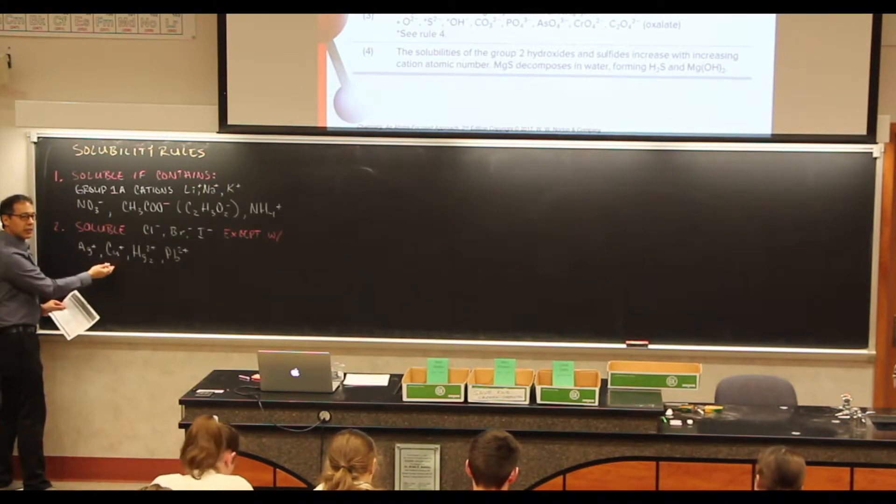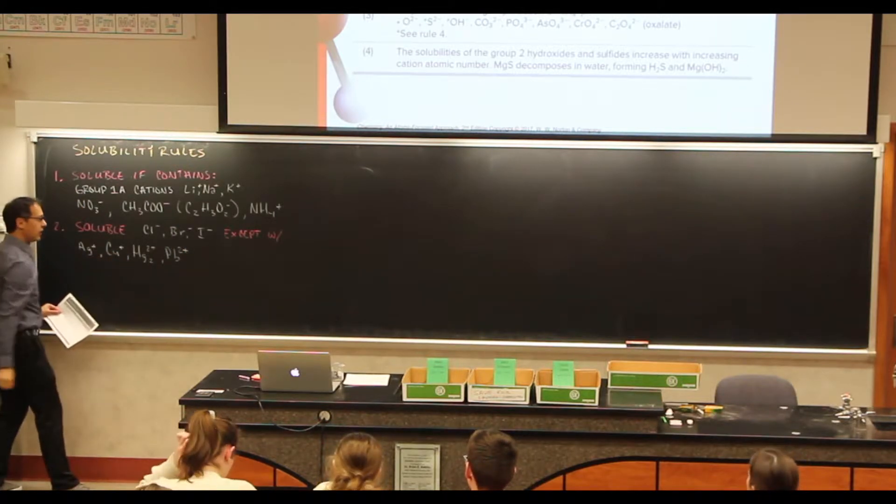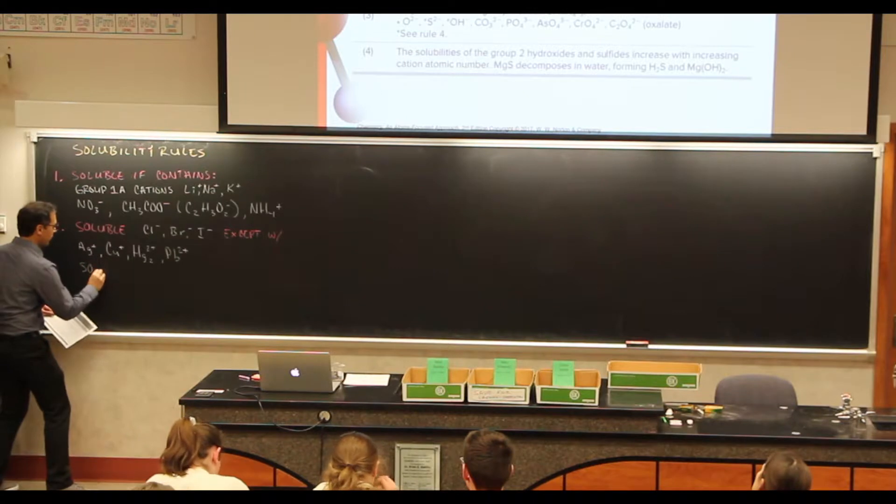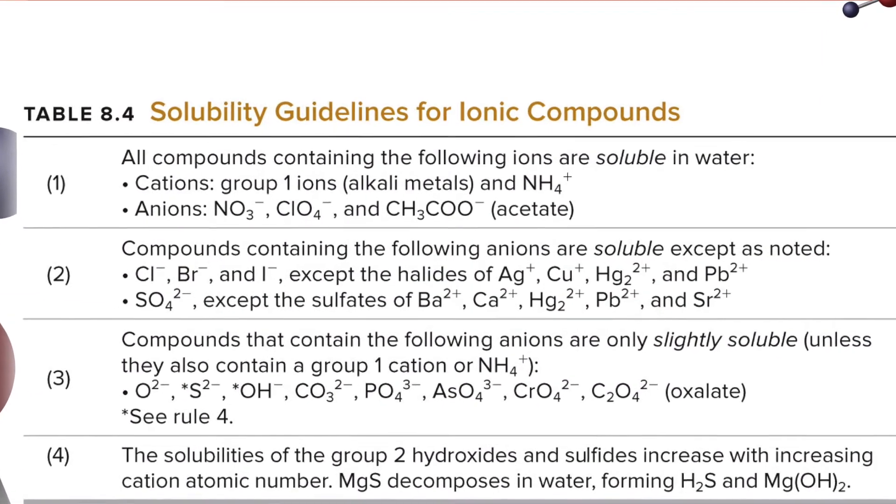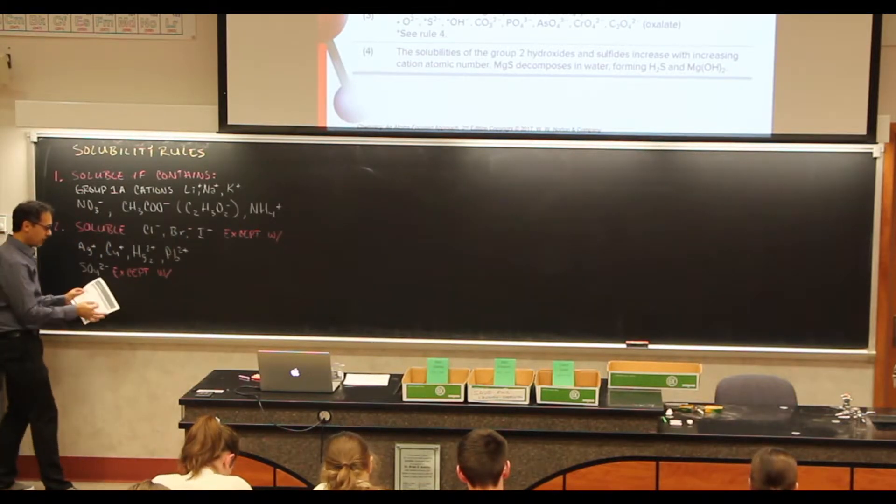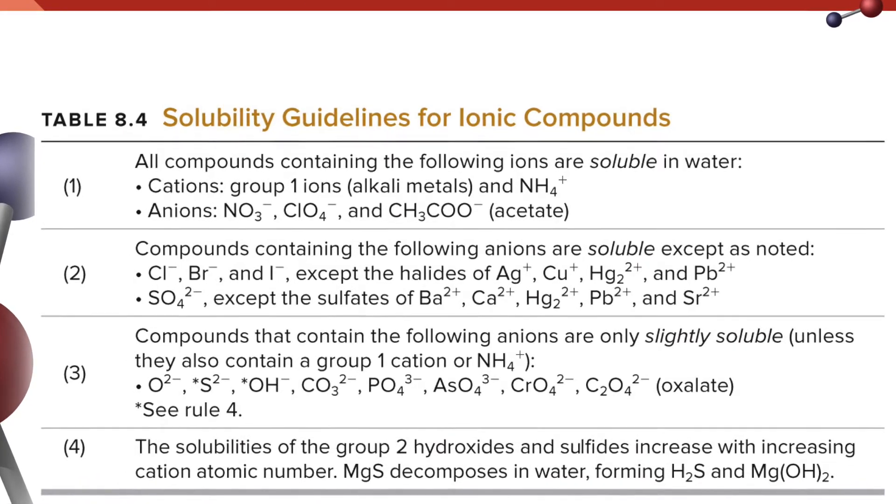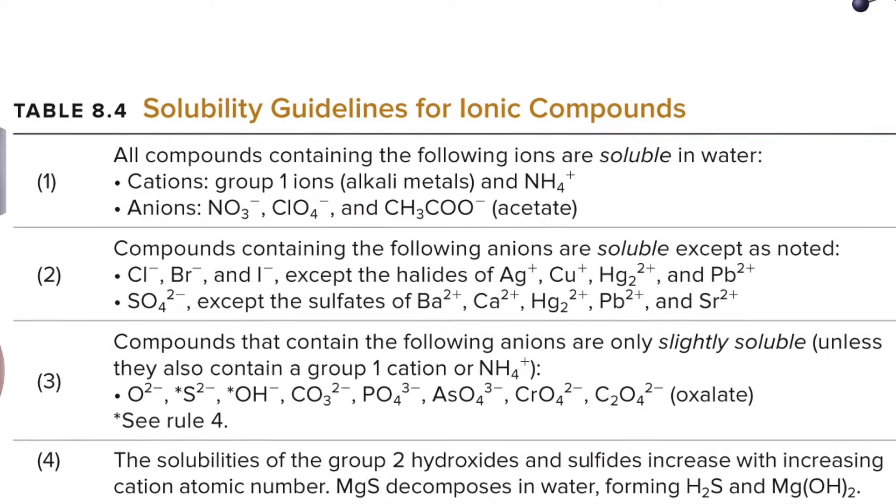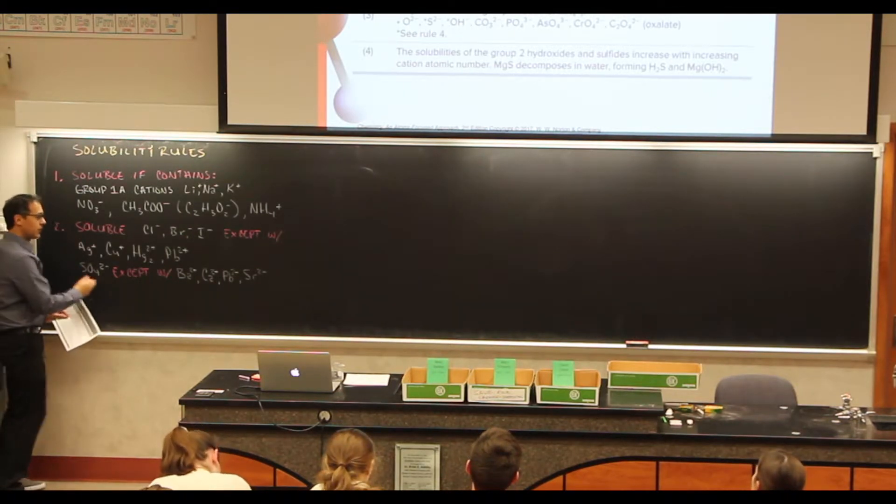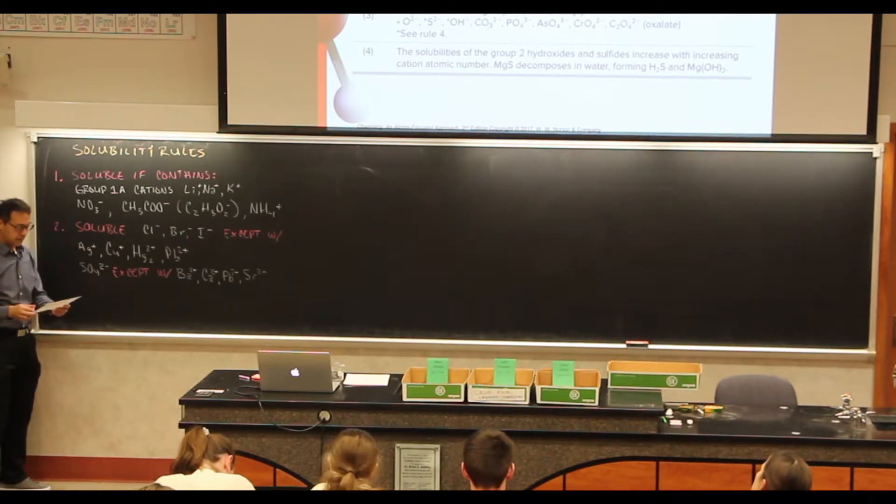Now, copper does come as a plus two cation, but this is just the one plus. And so these things are always soluble, except if these are present, then it will form a precipitate. Also, sulfates. SO4 2- is soluble, except with, if these other things are present. And this is going to be barium or calcium or lead or strontium. So sulfates, we think of these as being soluble, except if these things are present. If these things are present, they combine and form a precipitate. Any questions on that?